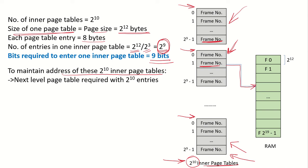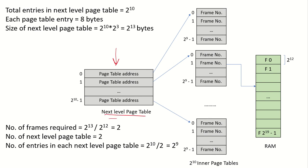We therefore need a next-level page table that has 2^10 entries, one for each inner page table address. This next-level page table stores the address of the first inner page table in its first entry, the address of the second in the next entry, and so on, up to the last of the 2^10 inner page tables.